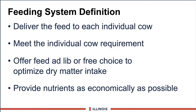Let's look at a basic definition of feeding system. In my definition, these are the four factors that come into play. One, to deliver the feed to each cow individually. Yes, I recognize at times there may be groups of 100 to 200 cows, but remember we have to meet each cow's individual requirement, even if she's in a mob of cows.